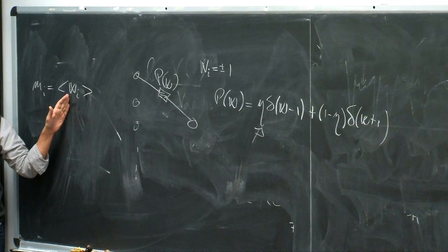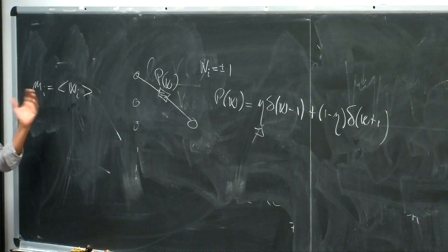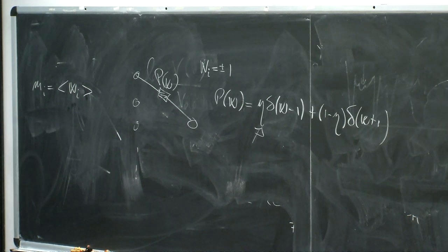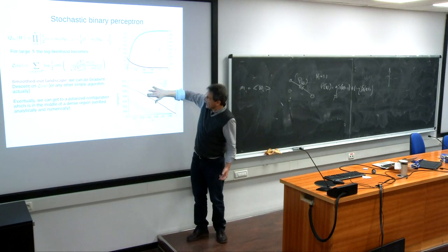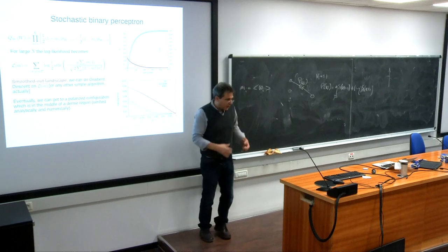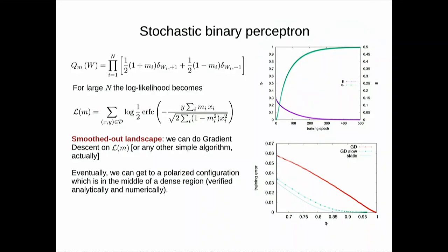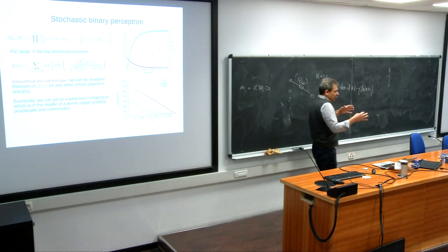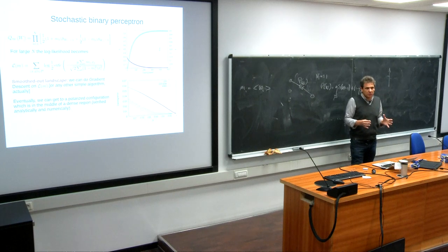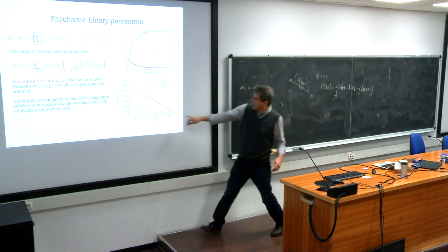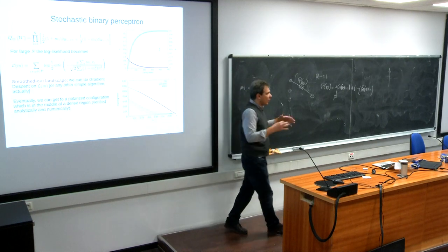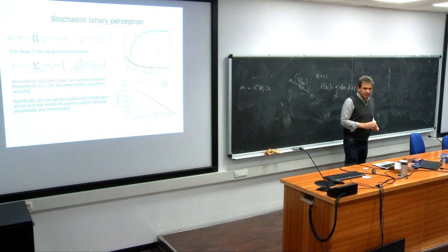If a synapse always takes value plus one, the distribution is a delta at one; otherwise the magnetization can be between minus one and plus one. One can show analytically that you can find solutions satisfying the entire training set when the magnetization of the weights is still different from one — in the stochastic regime you can store everything. For a magnetization of 0.85, with a lot of fluctuation remaining, you can store everything.